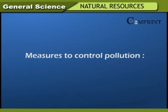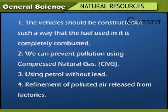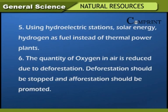Measures to control pollution: Vehicles should be constructed so that fuel is completely combusted. We can prevent pollution by using compressed natural gas and petrol without lead, refining polluted air released from factories, and using hydroelectric stations, solar energy, wind energy, and hydrogen as fuel instead of thermal power plants. The quantity of oxygen in air is reduced due to deforestation, so deforestation should be stopped and afforestation should be promoted.